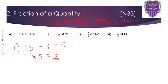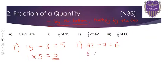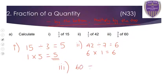So 1 third of 15 is 5. For part 2, 1 seventh of 42 — do 42 divided by the bottom, so 42 divided by 7, which is 6, because 6 times 7 is 42. Multiply by the top: 6 times 1 still gives you 6. For part 3, 3 fifths of 60 — do 60 divided by 5, which is 12, because 12 times 5 is 60. Then 12 times by the top, so 12 times 3 is 36.